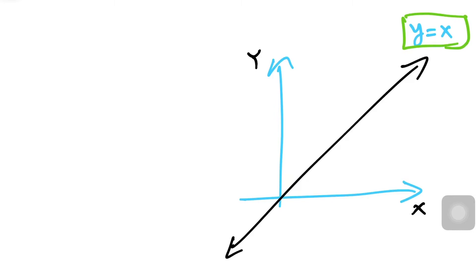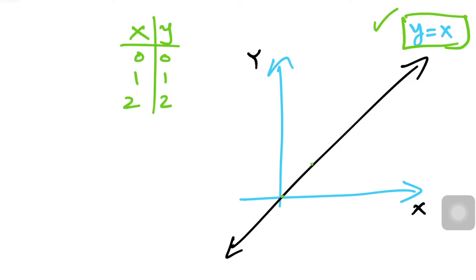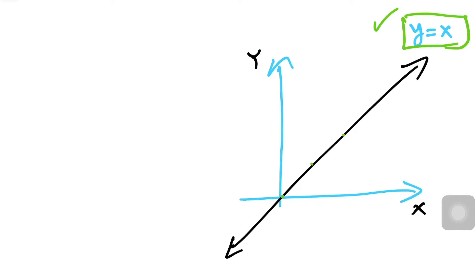Let's look at one easy example. We have a function y = x. We all know how to graph it — we just need a T-table: zero gives zero, one gives one, two gives two. Once we find those points we can draw a straight line.